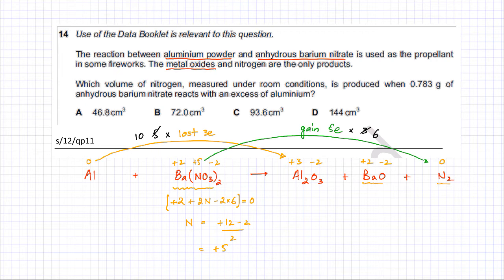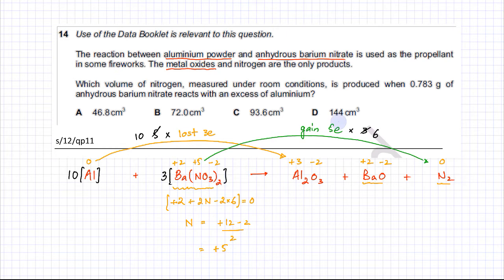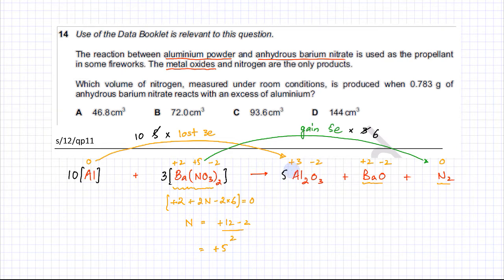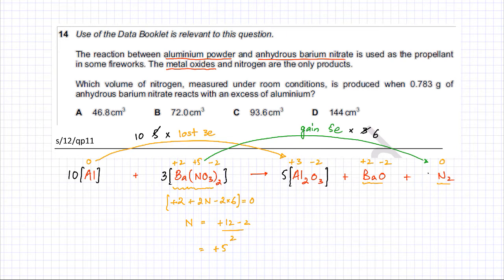Based on this ratio I'll balance the equation. I need 10 aluminium atoms and 6 nitrogens. Since each barium nitrate contains 2 nitrogens, I need 3 barium nitrate molecules to get 6 nitrogens. On the other side, 10 aluminiums means 5 molecules of Al₂O₃. And 6 nitrogens on the right means 3 N₂ molecules.